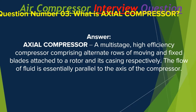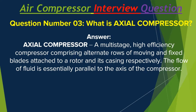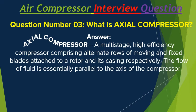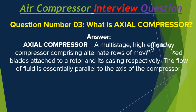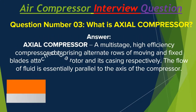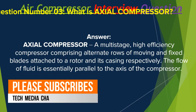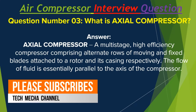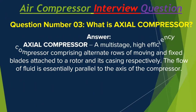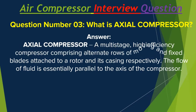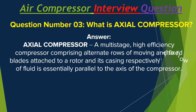Question number 3: What is an axial compressor? Axial compressor: a multi-stage, high efficiency compressor comprising alternate rows of moving and fixed plates attached to a rotor and its casing respectively. The flow of fluid is essentially parallel to the axis of the compressor.